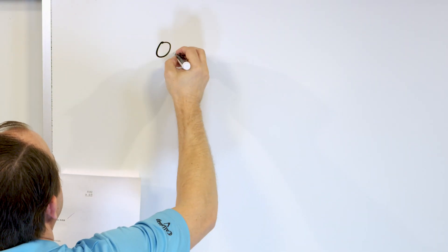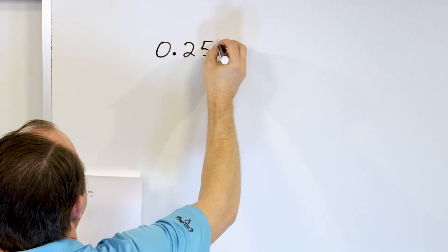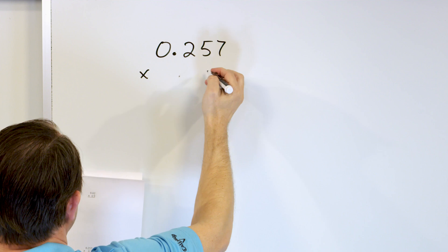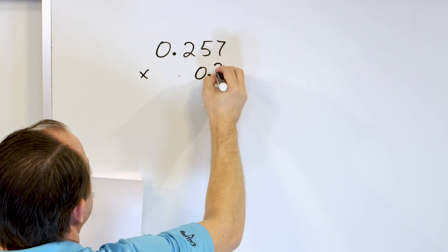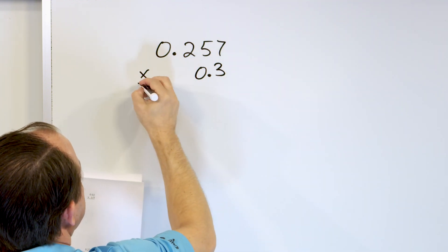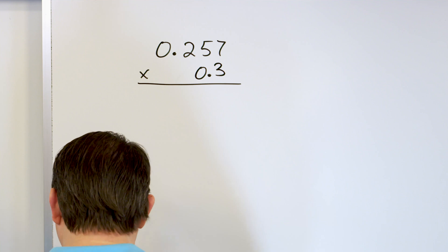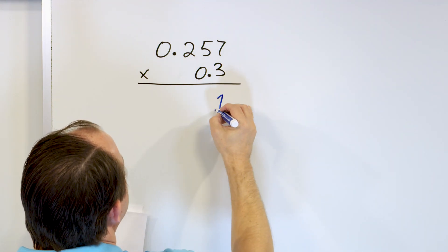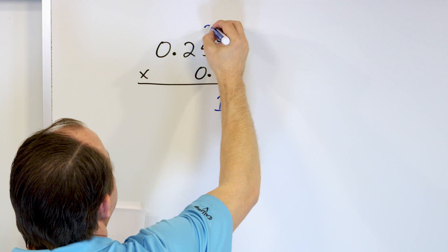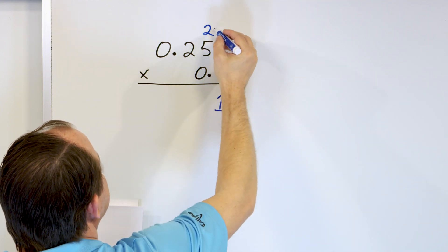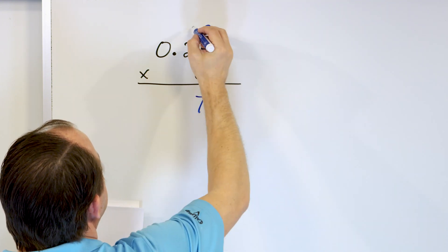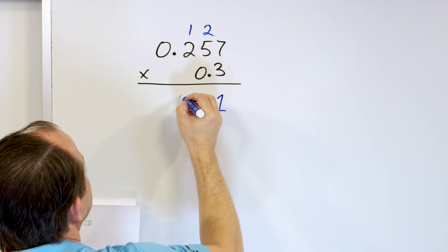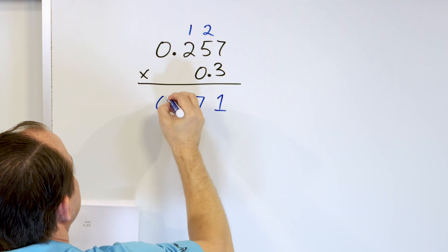Let's take a look at 0.257 multiplied by 0.3. Notice I line up the numbers — I do not line up the decimal points. So we multiply: 3 times 7 is 21, carry the 2. 3 times 5 is 15, plus 2 is 17 — write 7, carry the 1. 3 times 2 is 6, plus 1 is 7. 3 times 0 is 0.